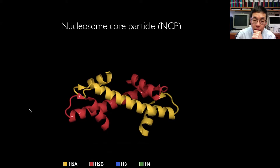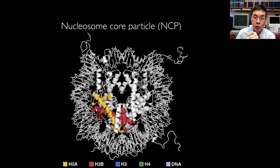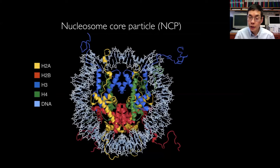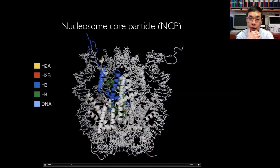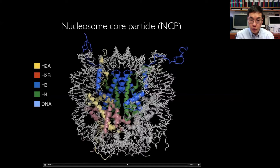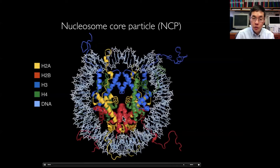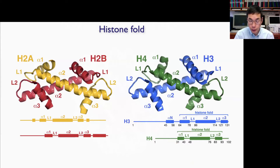That's one of the two principles: the histone fold as a heterodimeric structure. The H3-H4 dimer heterodimerizes around a four-helix bundle to make the H3-H4 tetramer. H2A-H2B also makes a four-helix bundle interaction between H4 and H2B, which allows the dimer to bind to the tetramer with DNA wrapped around it — relatively simple principles that explain the one-fold structure of the nucleosome.